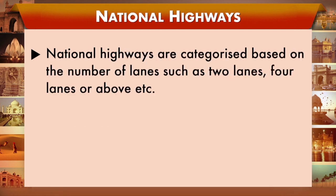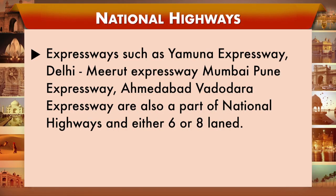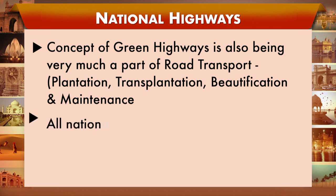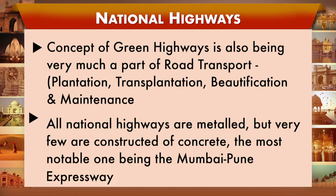National highways can be classified as 2-lane, 4-lane, or 6-lane depending on road width. Highways with more than 6 or 8 lanes fall under the special category of expressways, such as the Yamuna Expressway, Mumbai-Pune Expressway, and Ahmedabad-Baroda Expressway. India also has the concept of green highways, involving plantation, transplantation, beautification, and maintenance of roads using plantation. Most expressways are metalled; however, some like the Mumbai-Pune Expressway are constructed of concrete.